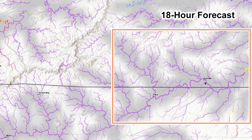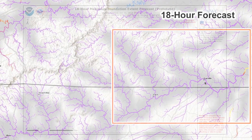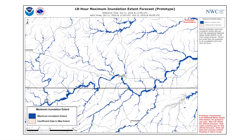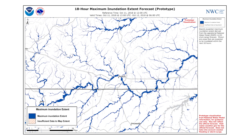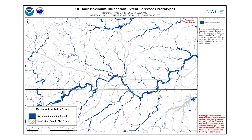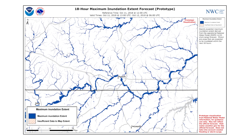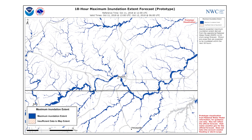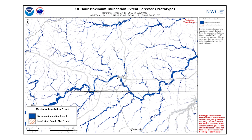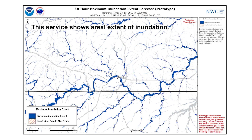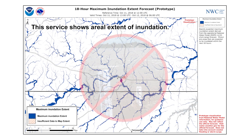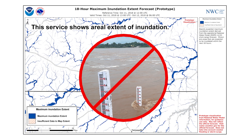Many streams were highlighted on the maximum high flow magnitude visualization during Hurricane Michael. We can zoom in on these areas of concern to see the associated inundation forecast. The blue shading shows model predictions of the maximum extent of riverine-induced flooding from nearby streams. This service shows aerial extent of inundation, but at this time does not provide details about flood depth.